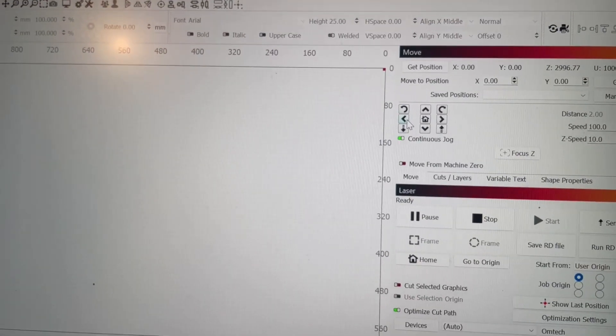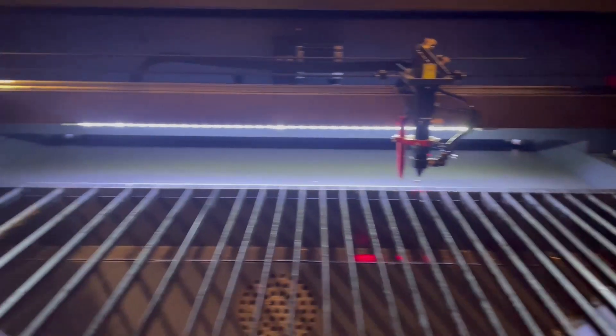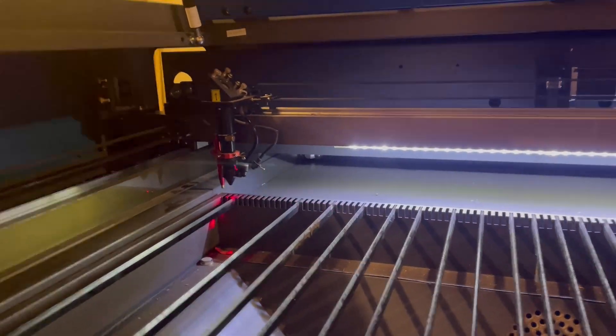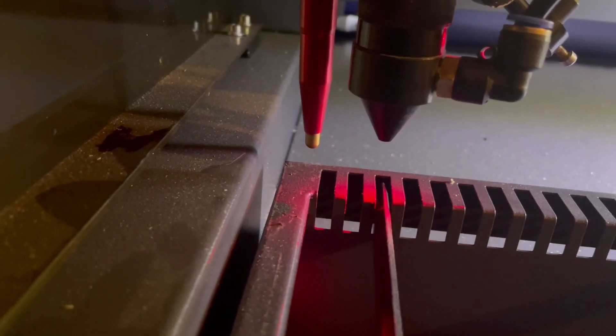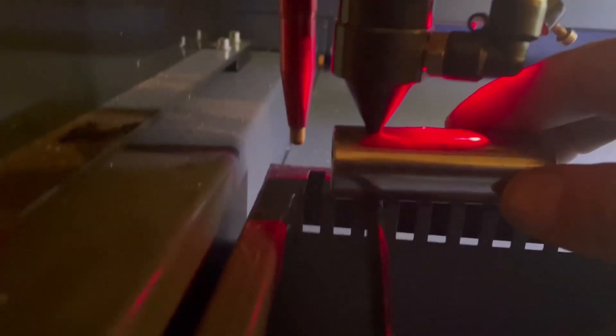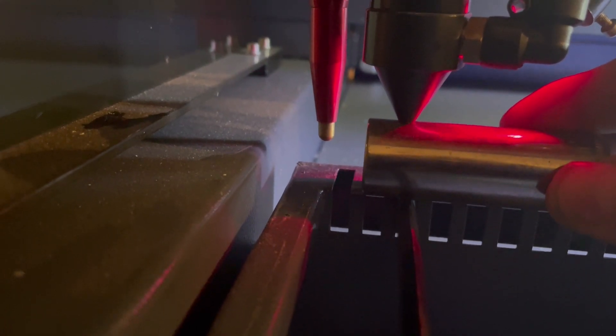Now that your bed height is set at that point, simply click here and jog your machine all the way over to the other corner. Now that I'm in the other corner, I'm going to take the same exact spacer and put it in. And as you can see, that's pretty good.